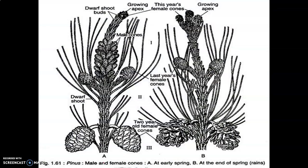This is the Pinus male and female cone. The male cones develop early. The female cones develop in clusters in this way — many female cones in a group. The male cone is single, present on one shoot.